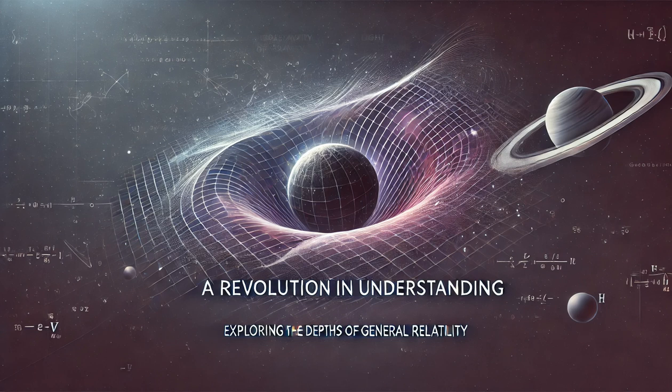Gravitational redshift. Light escaping from a strong gravitational field loses energy and shifts towards longer wavelengths. This has been observed in the light emitted from distant stars and galaxies.